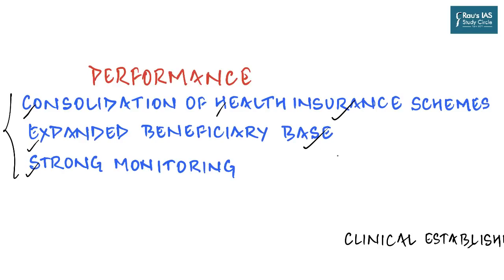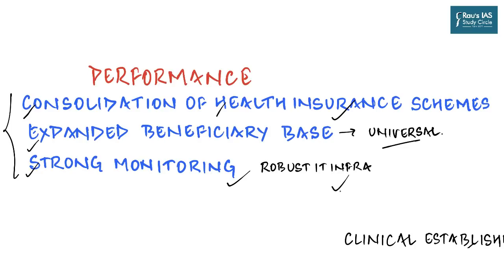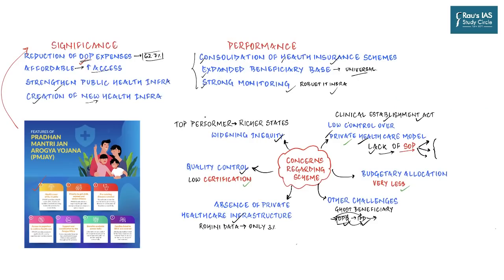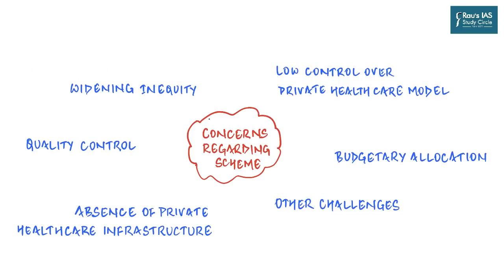Despite these positives, the scheme faces six main concerns. The first is widening inequity: analysis of disaggregated data shows that barring a few states like Chhattisgarh, most top performers under PM-JAY are the richer states. This is a major problem because for India to perform well, all states must perform well, not just the richer ones. The second concern is low government control over the private healthcare system.